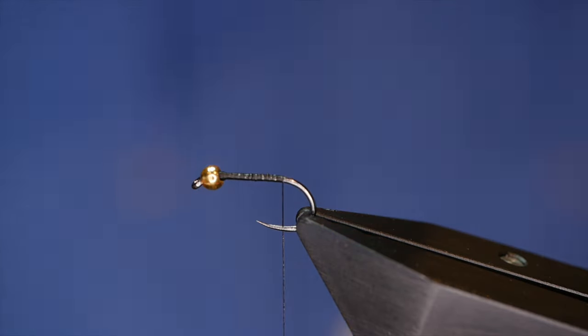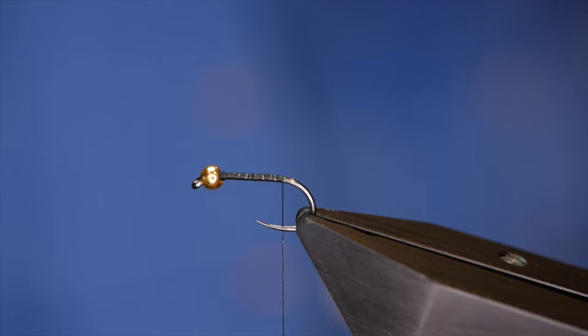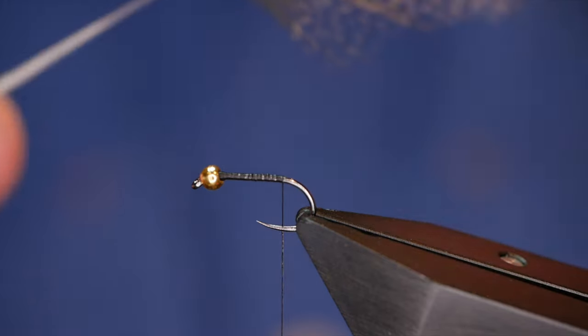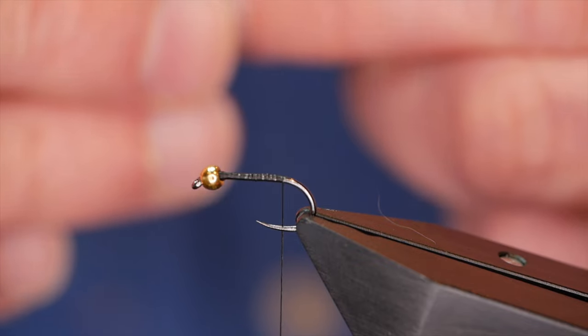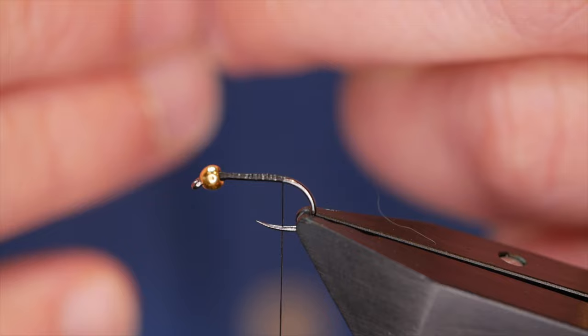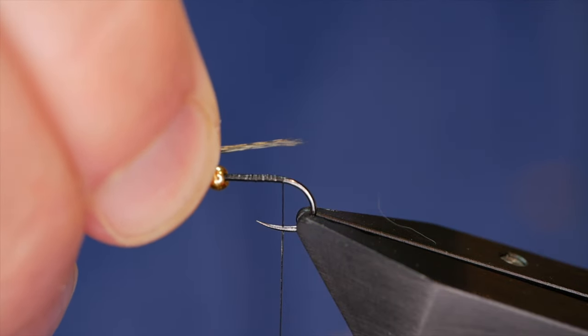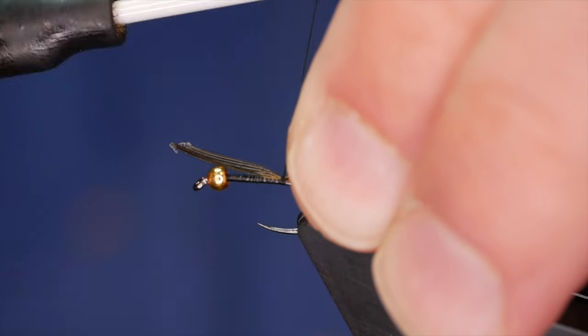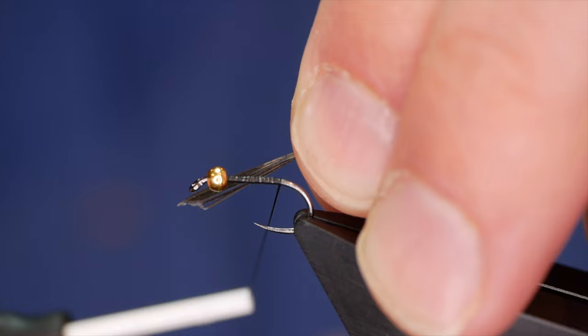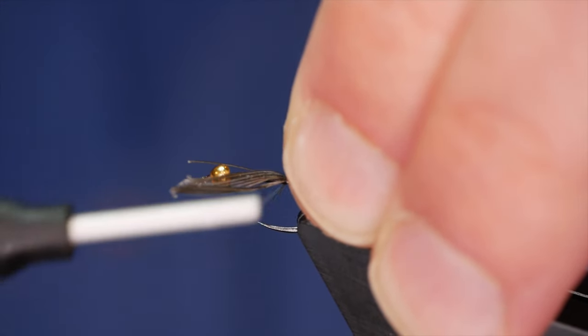For the tailing material I'm using Coq de Leon, this one's from Troutline called Rejonen. I like Coq de Leon for these smaller flies, they've got very thin sparse fibers and make great tails. I want to take maybe a dozen fibers from the stem, about the length of the shank. Just a tip here, I'm holding it to my side of the shank, and when I bring my thread over slowly it brings the feather on top.